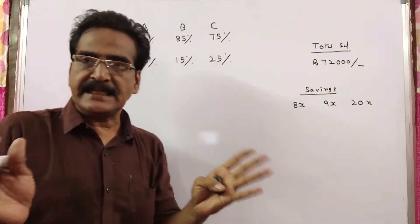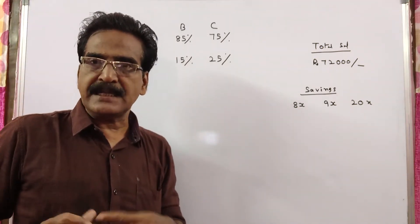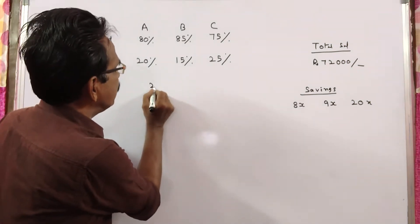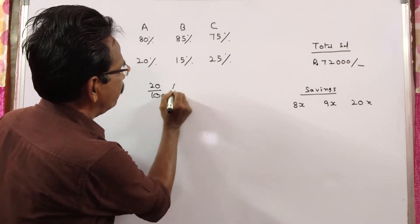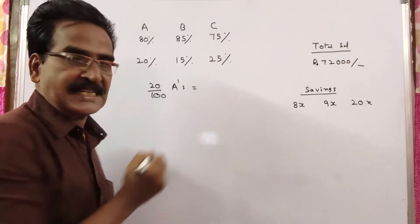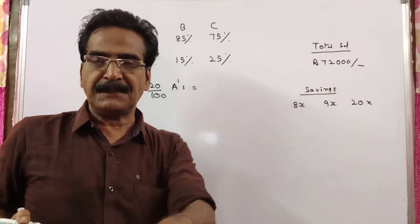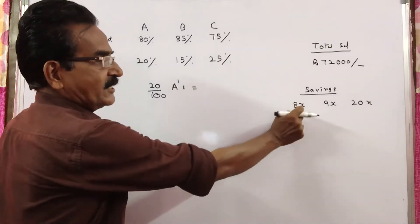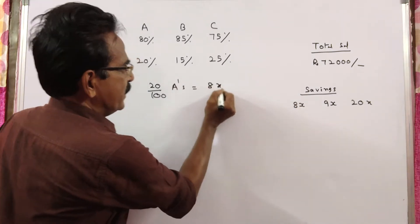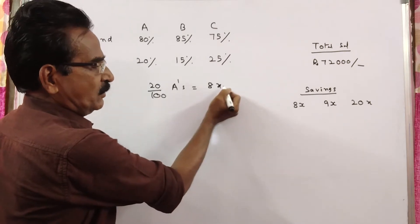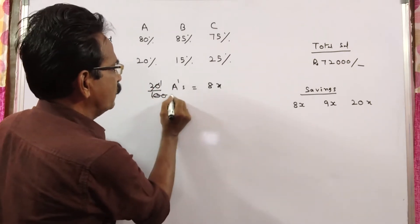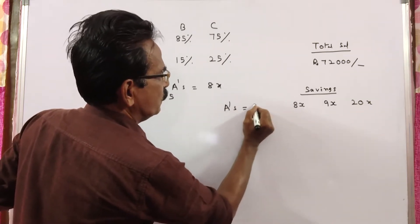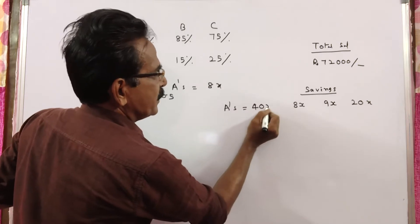See friends, A spends 80% of his income, that means A saves 20% of his income. So 20% of A's income is his savings. Actually he saves 8x. So 20% of A's income is equal to 8x. Therefore, A's income is equal to 40x.